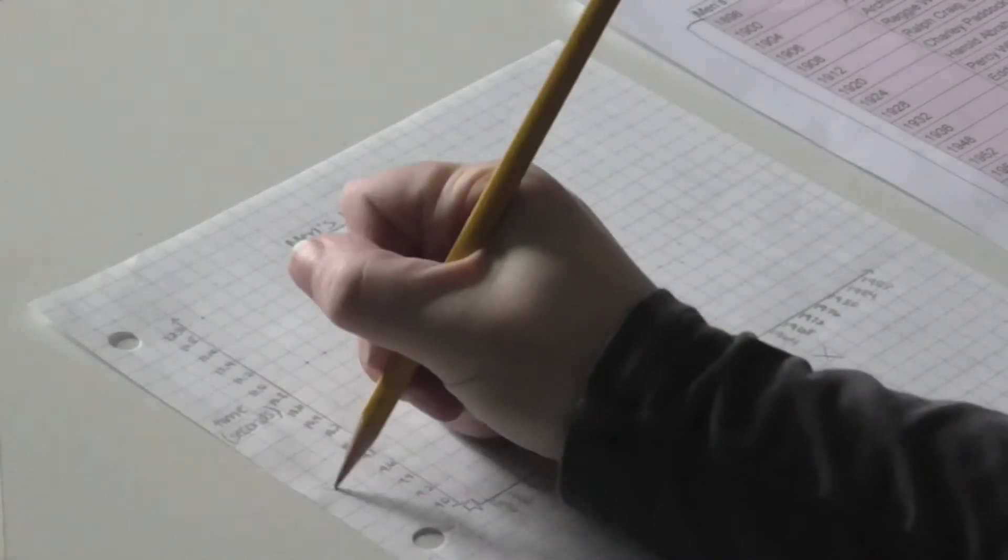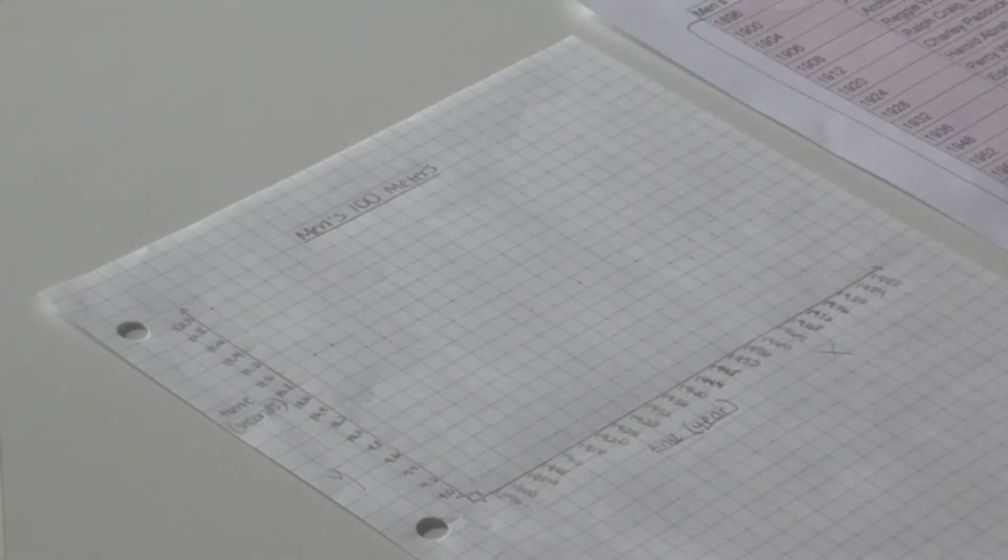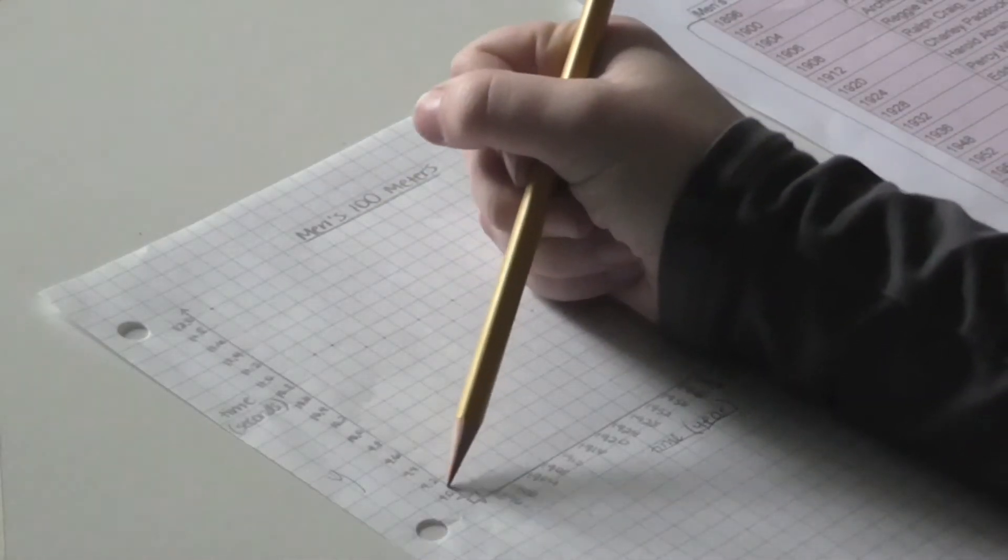The dependent variable, or y, is time in seconds. This represents the number of seconds it took for the first place runner to finish the 100 meter race. Those times on the y-axis go up by 0.2 seconds.